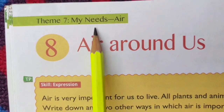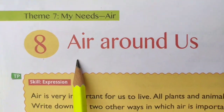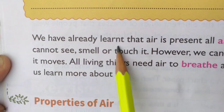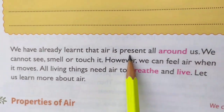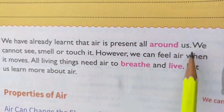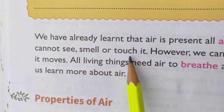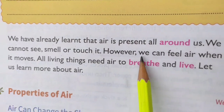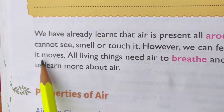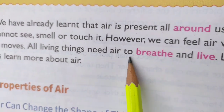Theme 7: My Needs. Air. Chapter 8: Air Around Us. We have already learnt that air is present all around us. We cannot see, smell or touch it. However, we can feel air when it moves. All living things need air to breathe.